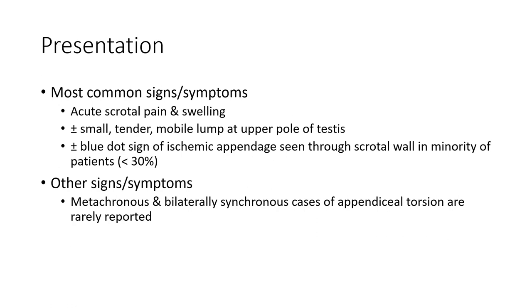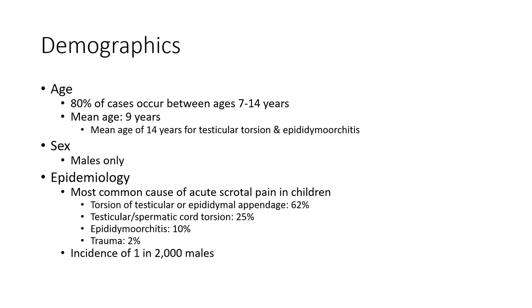Presentation: the most common signs and symptoms are acute scrotal pain and swelling, plus or minus a small tender mobile lump at the upper pole of the testes, plus or minus the blue dot sign of the ischemic appendix seen through the scrotal wall in a minority of patients, less than 30%. Other signs include metachronous and bilateral synchronous cases, which are rarely reported. Demographics: 80% of cases occur between age 7 to 14 years, with a mean age of 9 years.